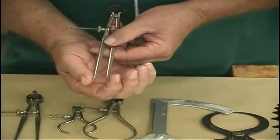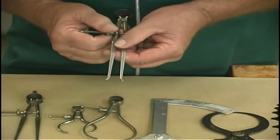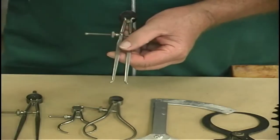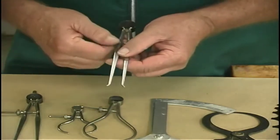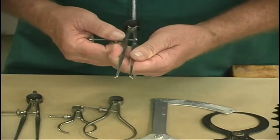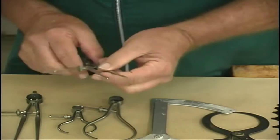This is an inside caliper. In other words, if you are boring a piece and you want to check the diameter of the hole, all you have to do is set it and go with whatever you need.